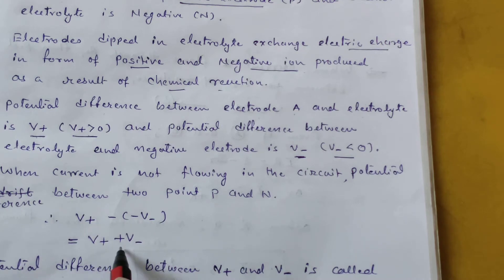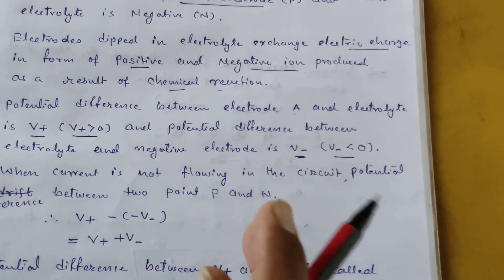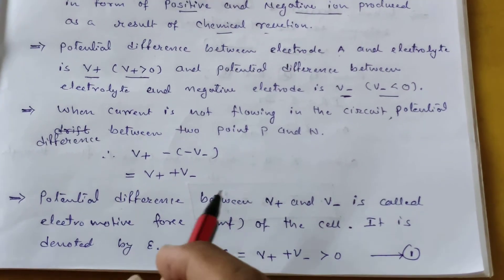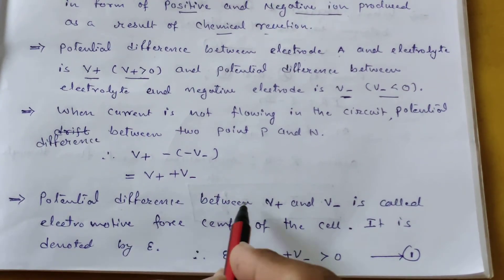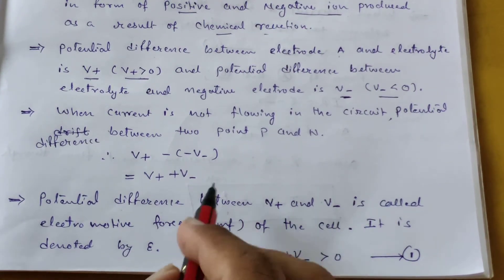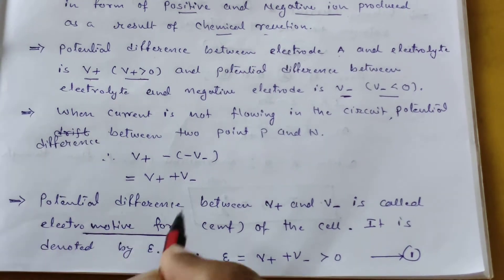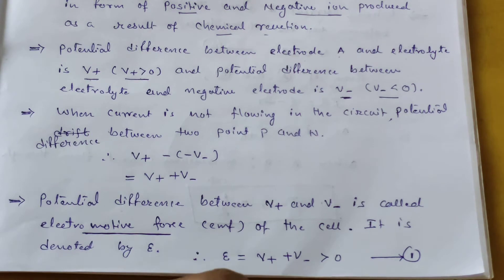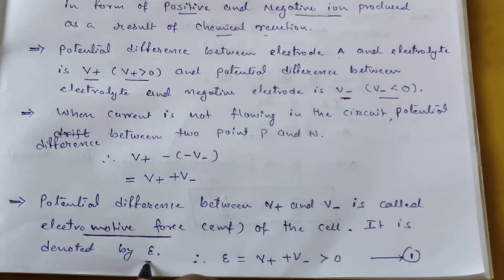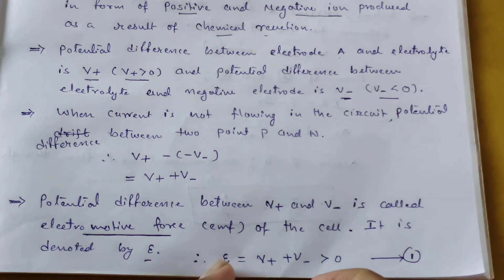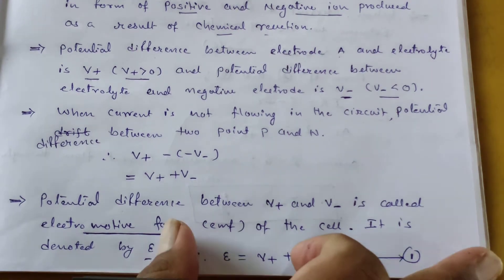So the potential difference is V+ plus V−, and the potential difference between V+ and V− is called electromotive force. This is indicated by epsilon. Electromotive force is nothing but the addition of V+ plus V−, and it is always greater than zero.